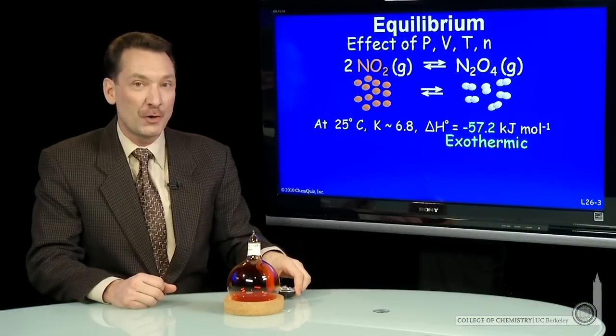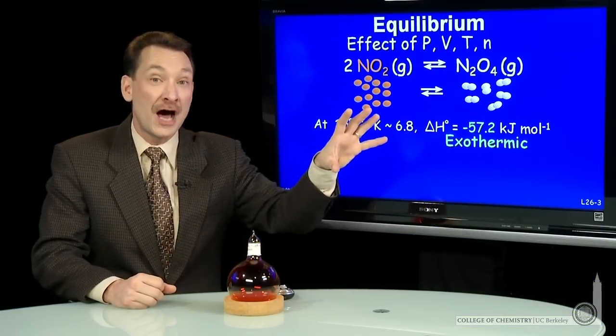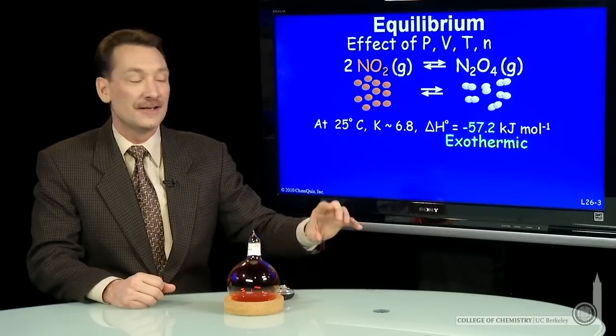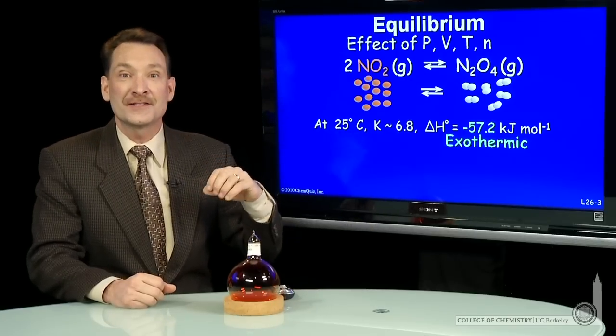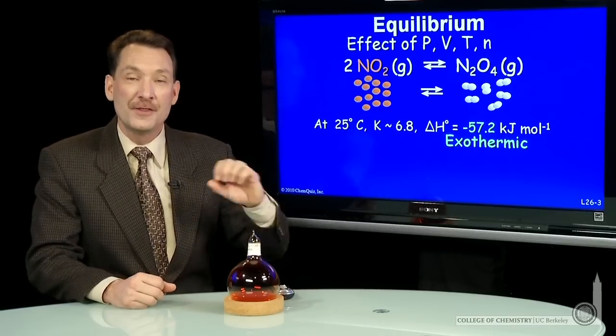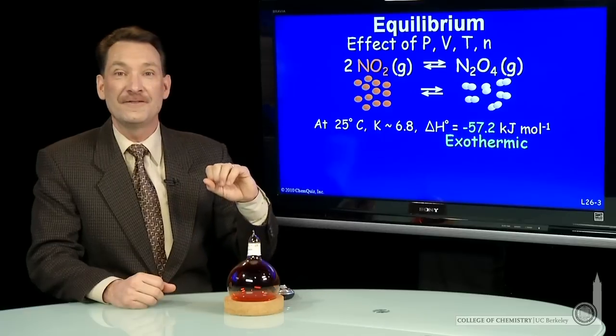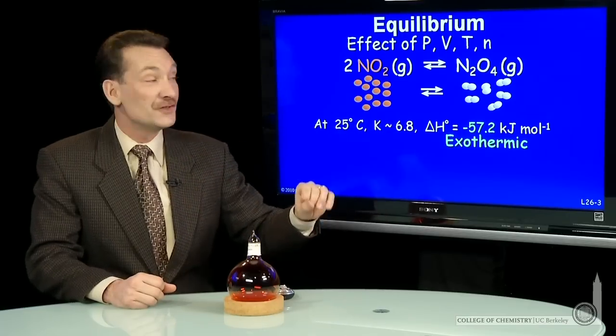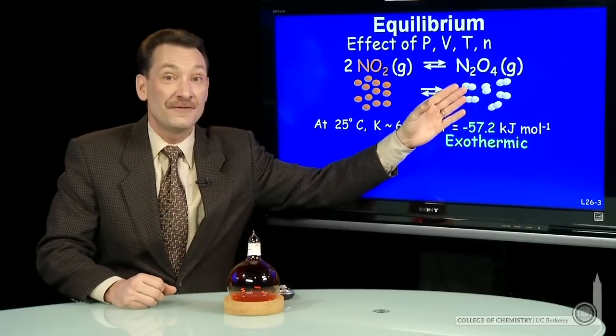Now, 6.8, the equilibrium expression is products over reactants. So since the equilibrium constant is larger than 1, the products are slightly favored, in this case, over the reactants.